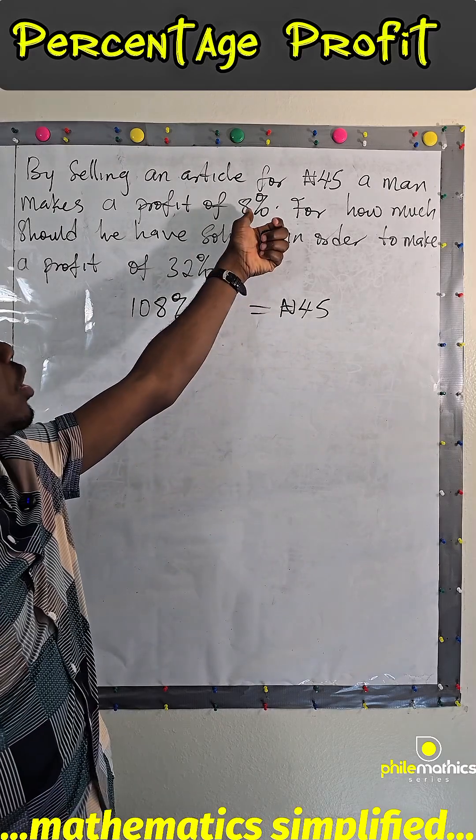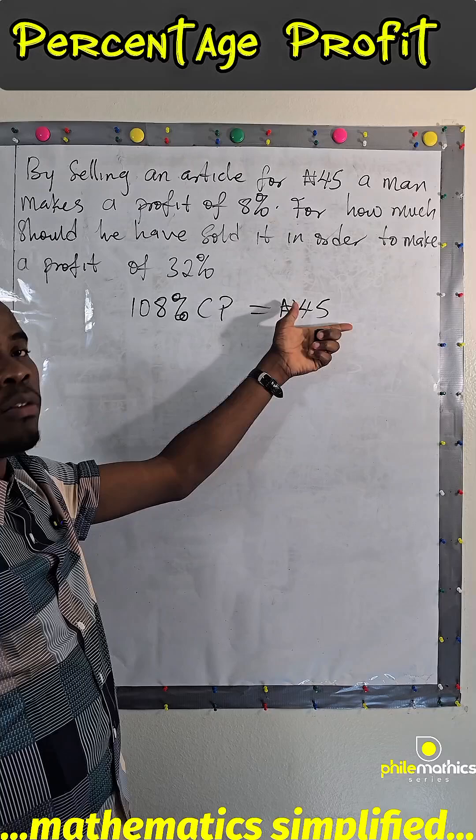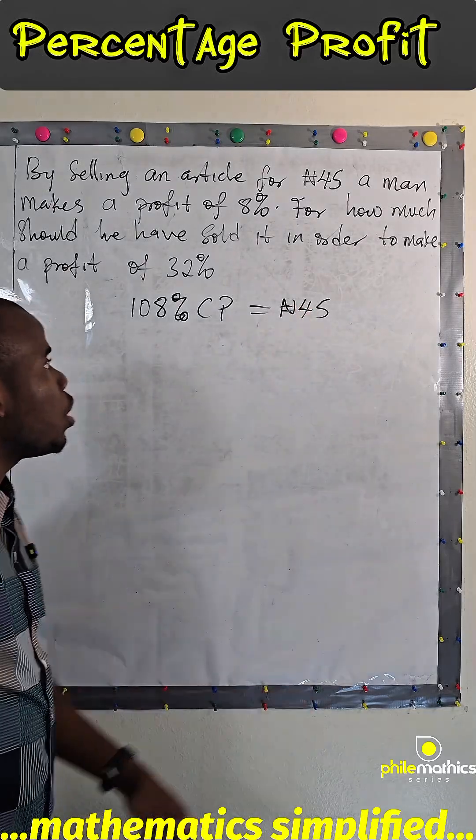So, if he lost 8%, it would be 92% of the cost price. That's what will give you the selling price if he made loss.